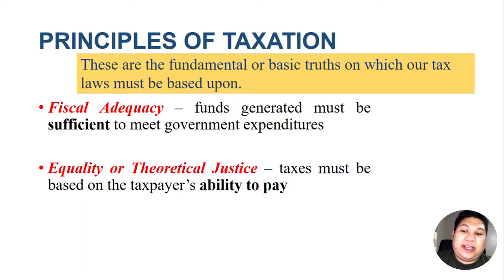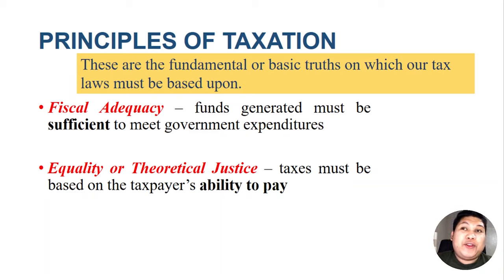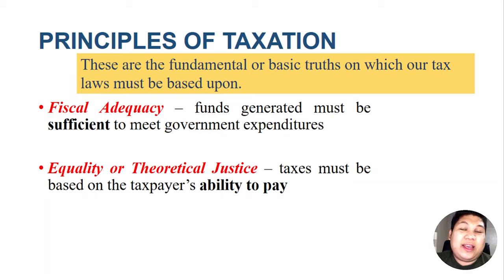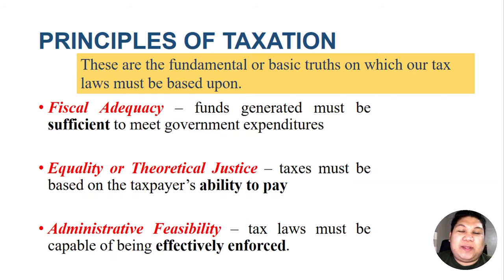The second principle of taxation is that it must be equal, or based on theoretical justice. Taxes must be based on the taxpayer's ability to pay. When the Senate or Congress drafts a tax law, they must consider the capacity or ability of the taxpayer to pay — they should know who they are taxing and who will pay these taxes.